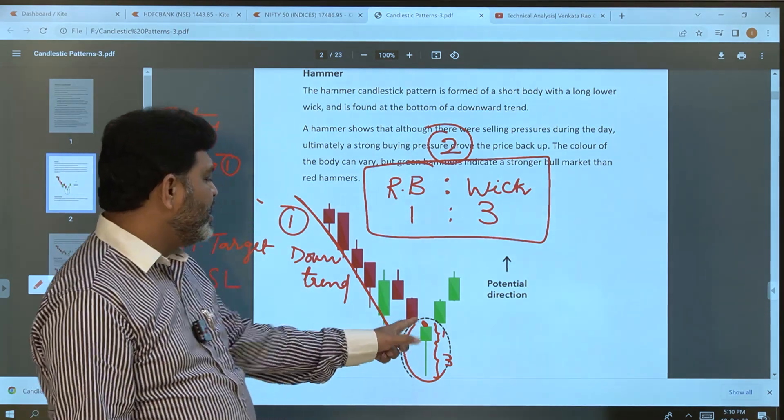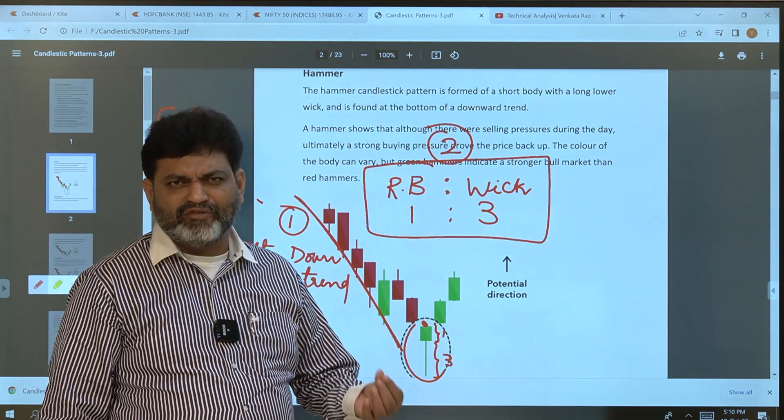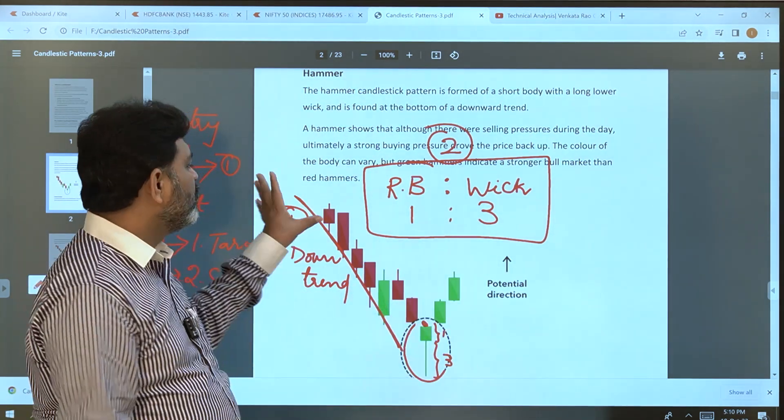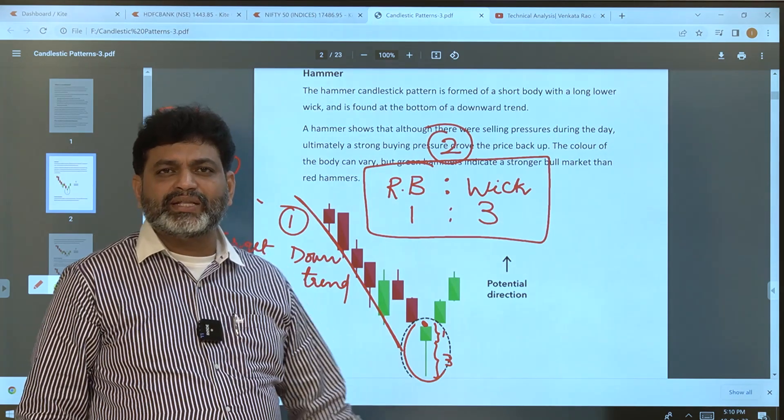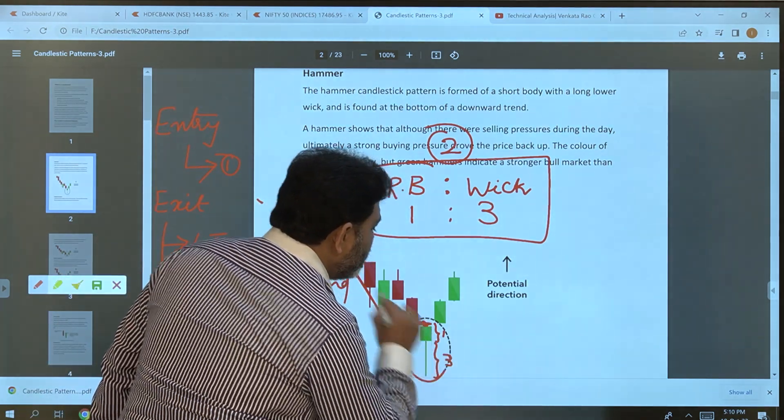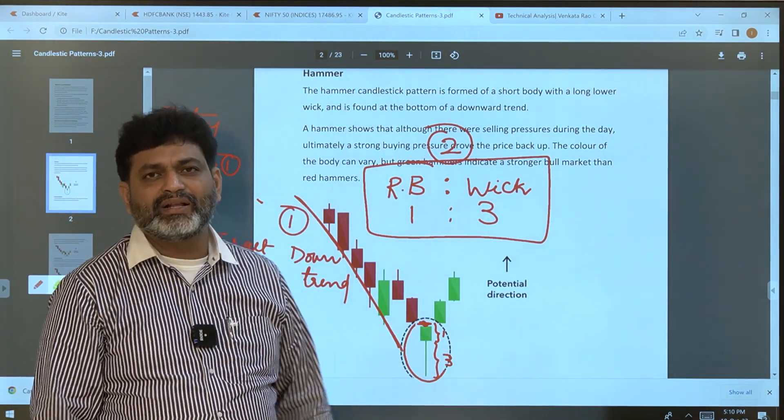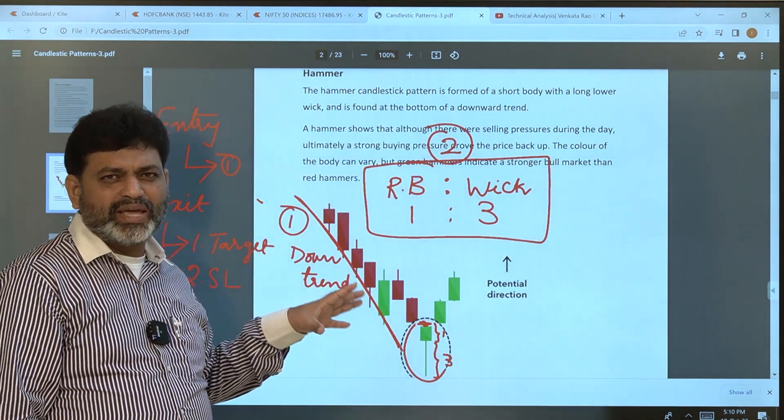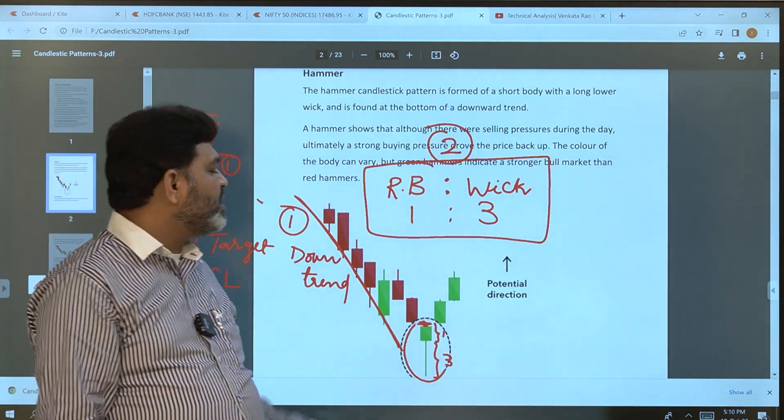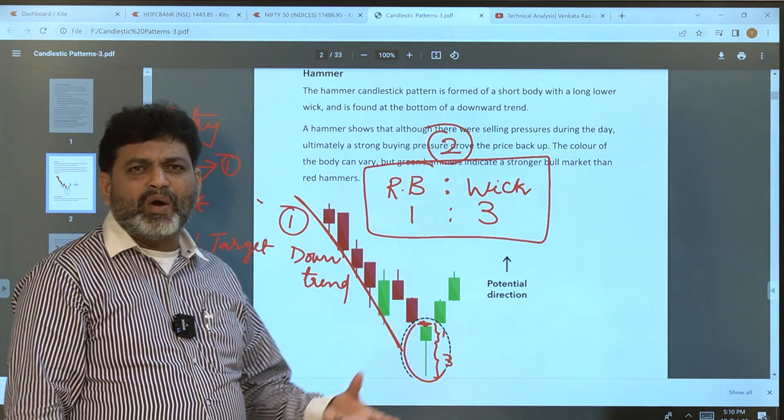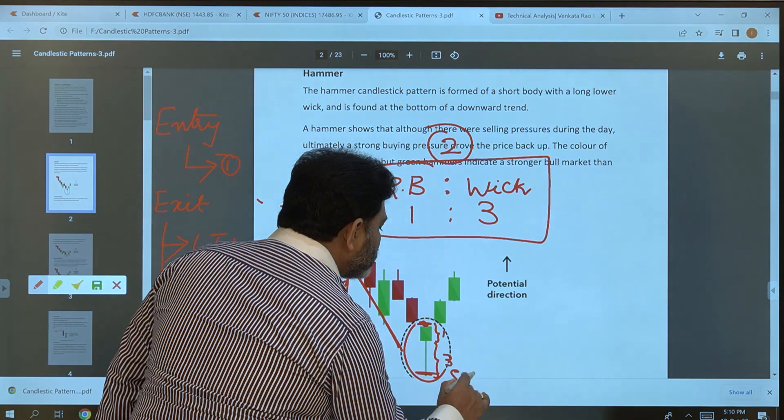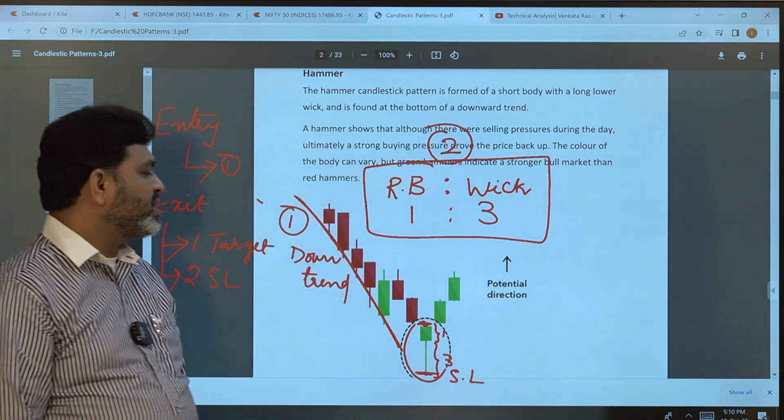Once this candle closes, as we discussed in the first video about different timeframes, suppose if it is a one-day candle for investment purposes, we should wait until this candle's high breaks. Wait for the next candle to complete and close. When the second candle breaks the first candle's high, that is the entry point we should consider. And wherever the low is, we should consider that as the stop loss.